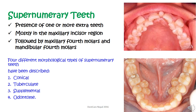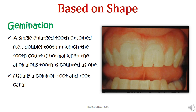Supernumerary teeth is the presence of one or more extra teeth. We normally have 32 permanent teeth. Supernumerary teeth can be present mostly in the maxillary incisor region — as we can see in the first picture, there is a mesiodens between the two maxillary central incisors, which is a small tooth. Maxillary and mandibular fourth molars can also be supernumerary. Four morphological types of supernumerary teeth are described: conical, tuberculate, supplemental, and odontome.